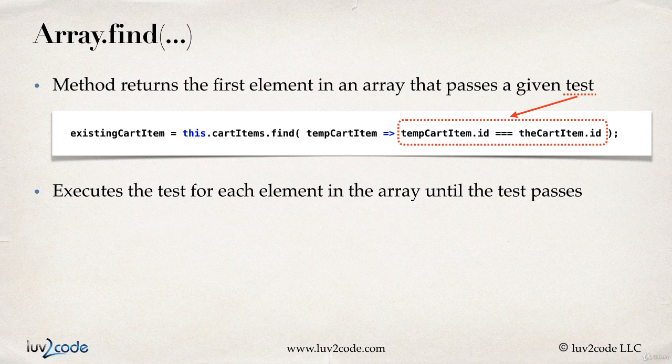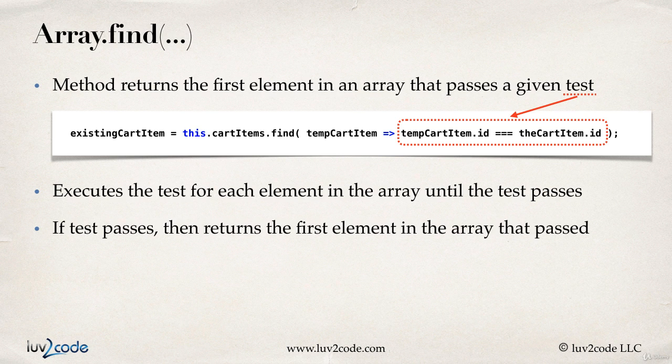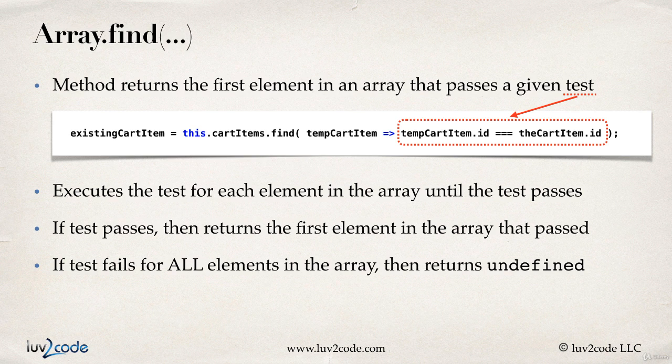It'll loop through the elements in the background. If the test passes, then it's going to return the first element in the array that passed. If the test fails for all elements in the array, then it's going to return undefined. Basically meaning, hey, I couldn't find that element.